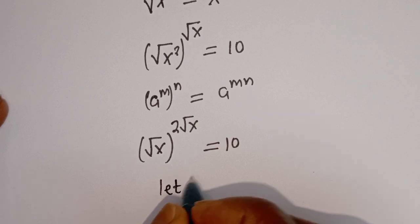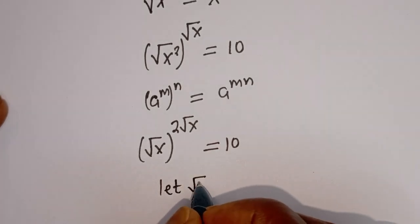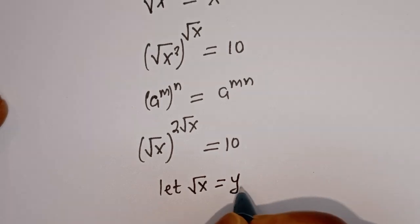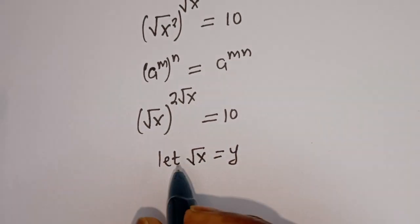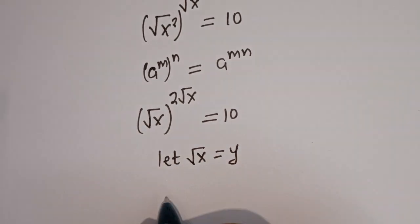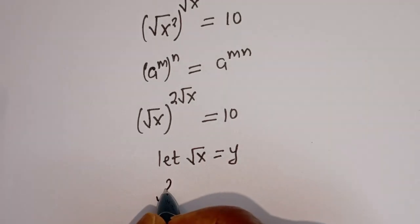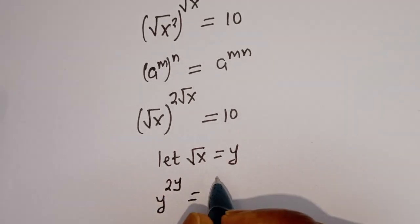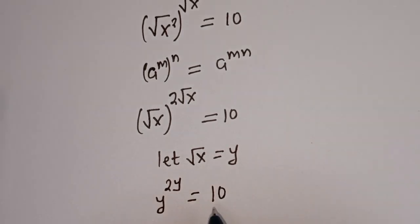Now let square root of S equal Y. Let's substitute here. We have Y to the power of 2Y is equal to 10.